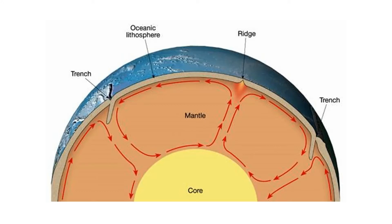The plates move because they're sitting on top of the mantle of the Earth. The mantle moves because the 6,000-degree-centigrade core heats up magma, and plumes of magma move up to the surface, spread out along the surface of the mantle, and then sink back down. Since the mantle is moving, the plates floating on top of it move as well. This session focuses on what happens at the edges of the plates.